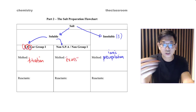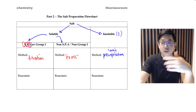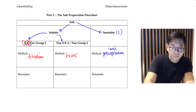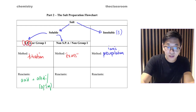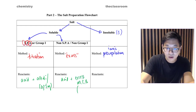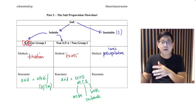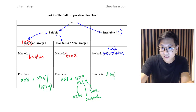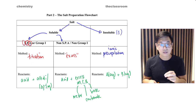In some schools, the excess method is called crystallization. Once we figure out the method, we move on to the reactants. For titration, we typically add an acid and an alkali, or a soluble carbonate. For the excess method, we add acid plus excess metal, carbonate, or base. For ionic precipitation, we add two aqueous reactants — it could be an acid, an alkali — as long as they are aqueous, they will work.